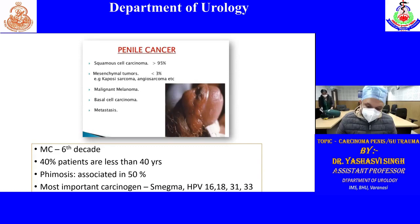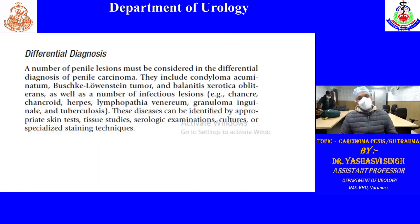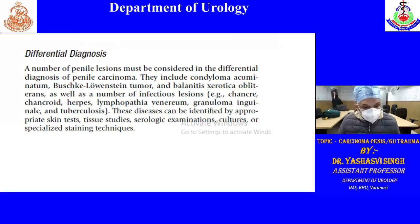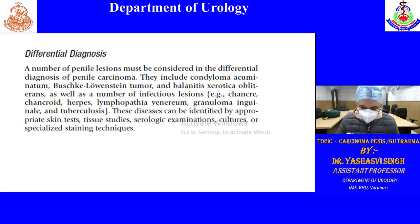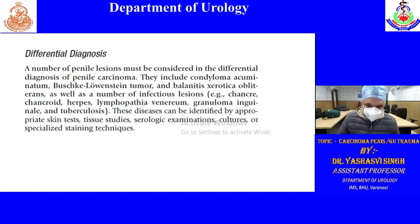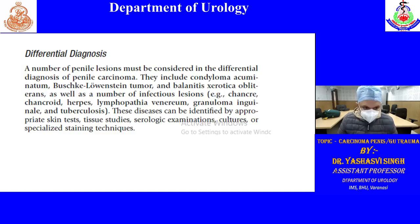A favourite exam question is: what is the differential diagnosis of CA penis? Non-infectious DDs include condyloma acuminatum, Buschke-Löwenstein tumour, and balanitis xerotica obliterans. Infectious DDs include chancre, chancroid, herpes, LGV, and tuberculosis. You should know all these conditions by heart.